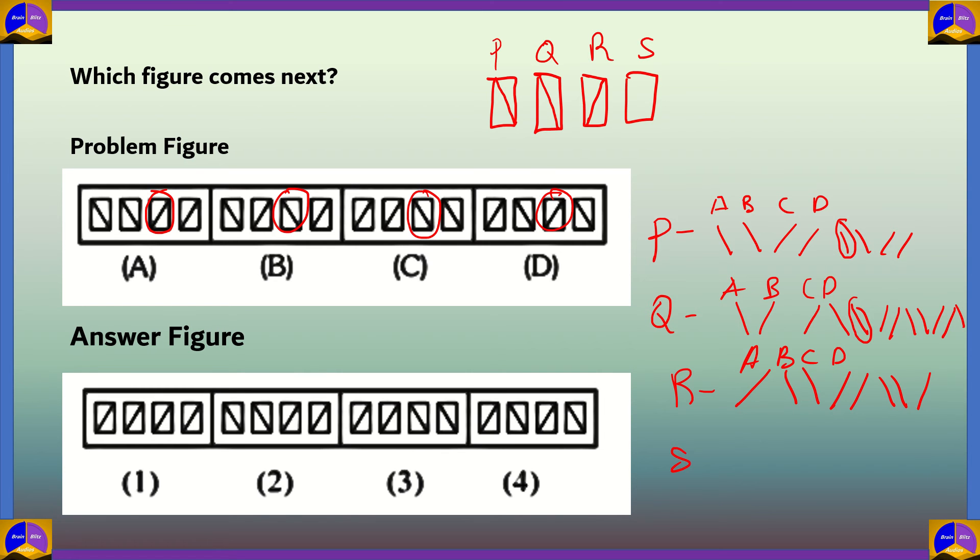In box S, let's look at the pattern. It's slash, slash, backslash, backslash, backslash, backslash. We'll continue A, B, C, D. If we continue on, slash, slash, backslash, backslash, slash, slash.